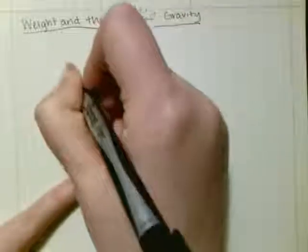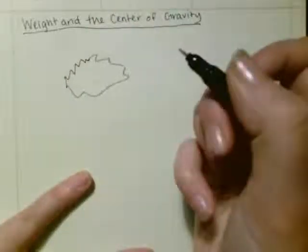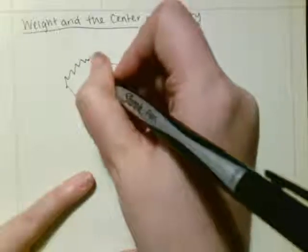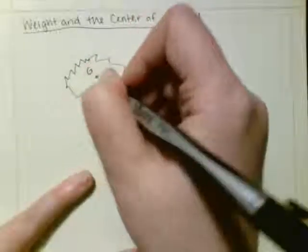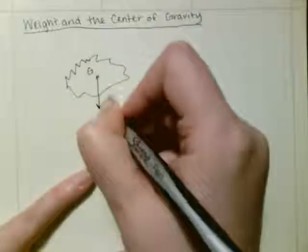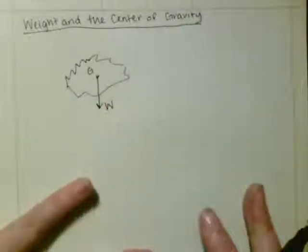So say we had some object. It's a beautiful object. You've got your center of gravity and your weight acting from that point.